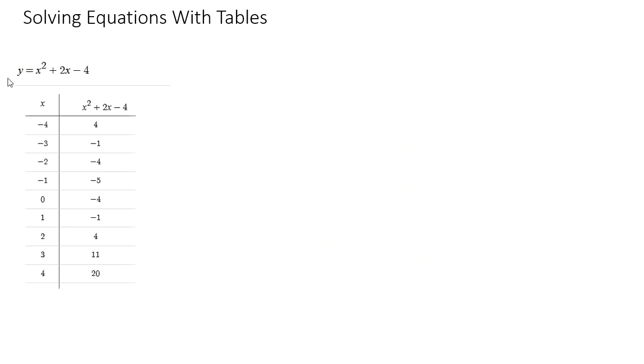So here we have the table of y equals x squared plus 2x minus 4. So let's say we want to solve the equation. Now again, I'm going to have to use something equals x squared plus 2x minus 4 in order for you to be able to use this table to solve this. I have to write the equation so this matches. So I'm going to pick a value. Let's pick negative one. So again, this is my y value.